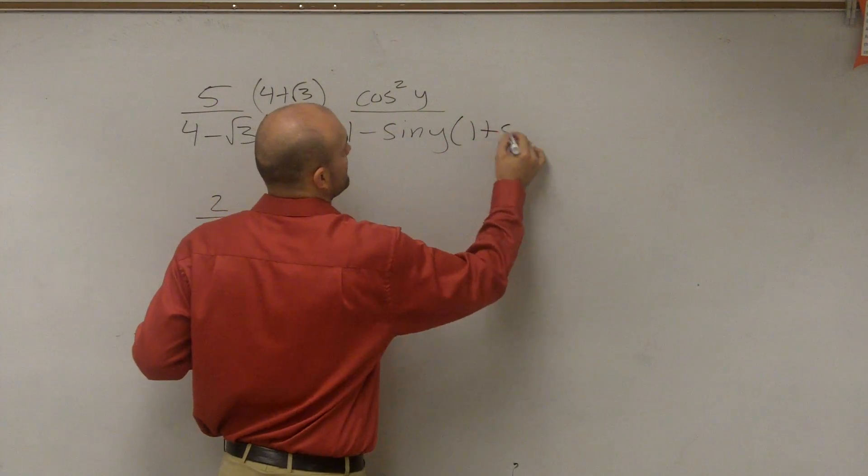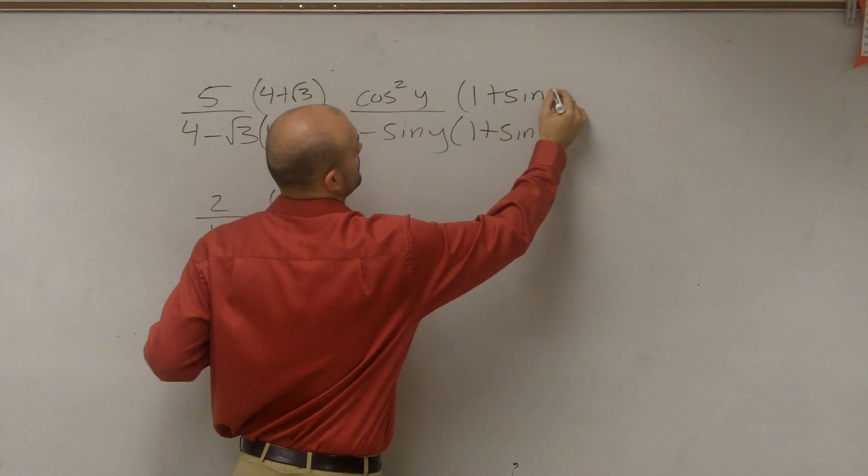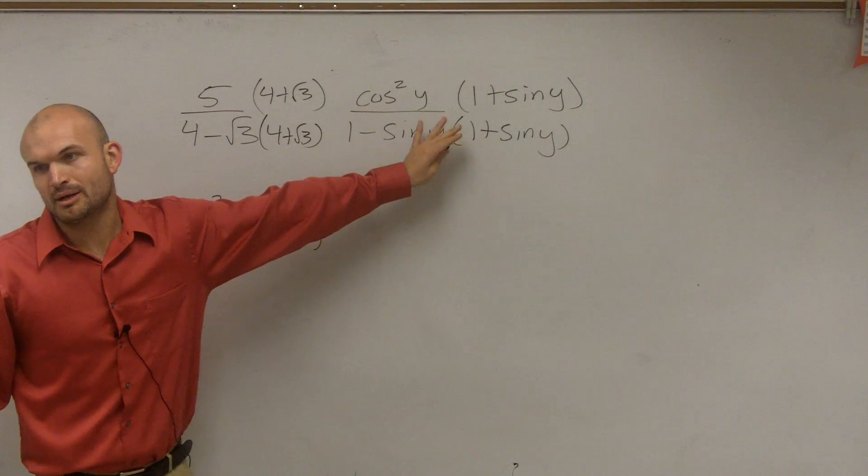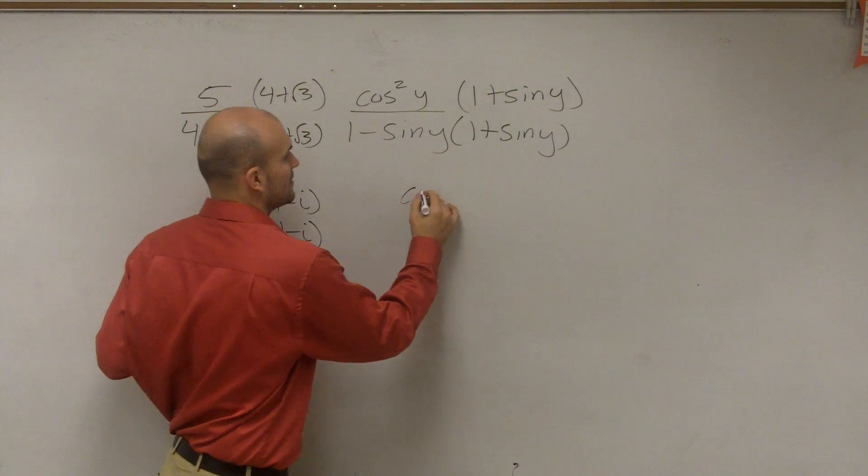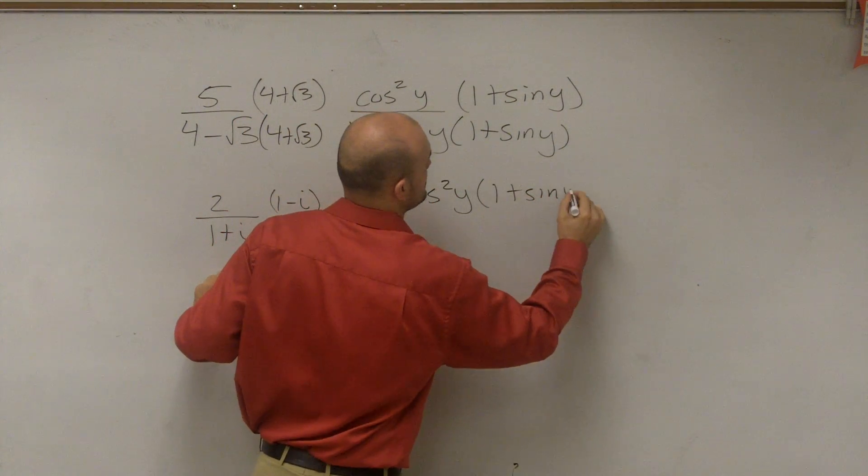So when I multiply by the conjugate, I'm going to 1 plus sine of y. Now, I'm not going to distribute up top. I'm just going to leave that as is for right now. So I get cosine squared of y times 1 plus sine of y.